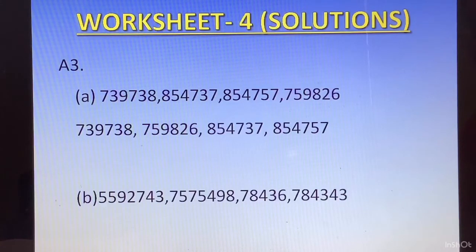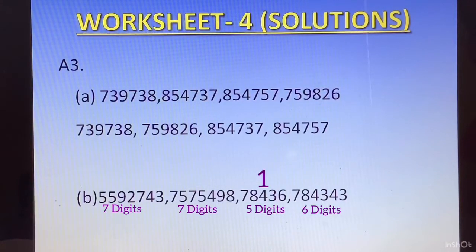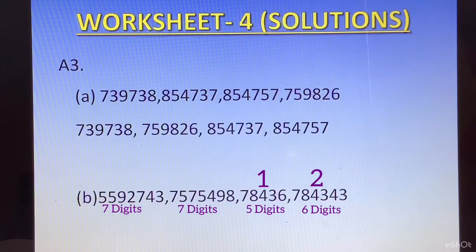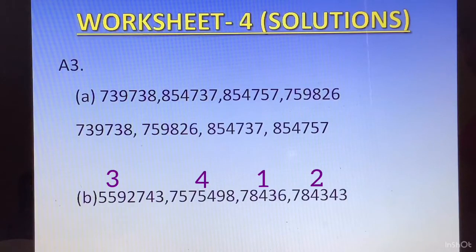In the B part, there are different numbers of digits in each number. The first has 7 digits, the second has 7 digits, the third has 5 digits, and the fourth has 6 digits. In ascending order, the first is the 5-digit number: 78436. Second place goes to the 6-digit number: 784343. For third and fourth, both remaining numbers have 7 digits. Comparing first digits: 5 and 7. The number starting with 5 — 5592743 — takes third place, and 7575498 takes fourth place.